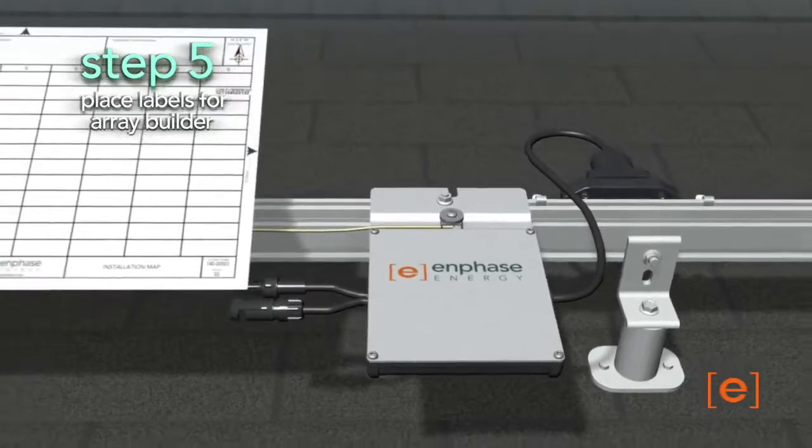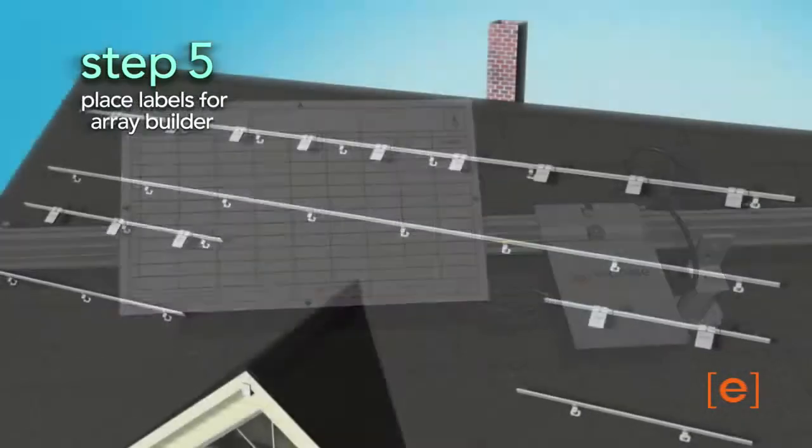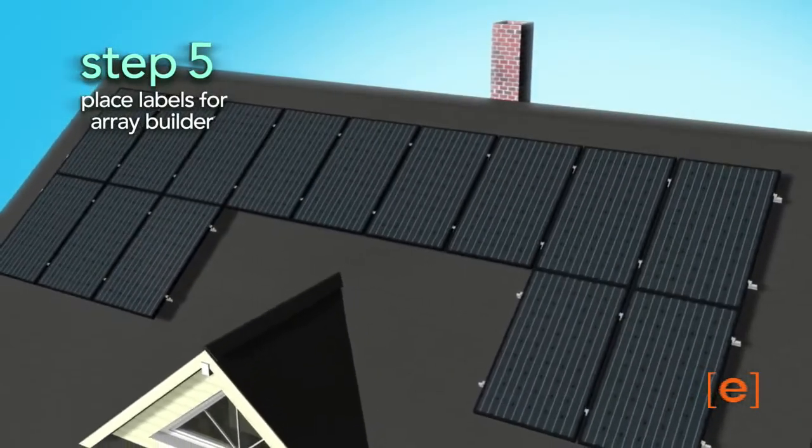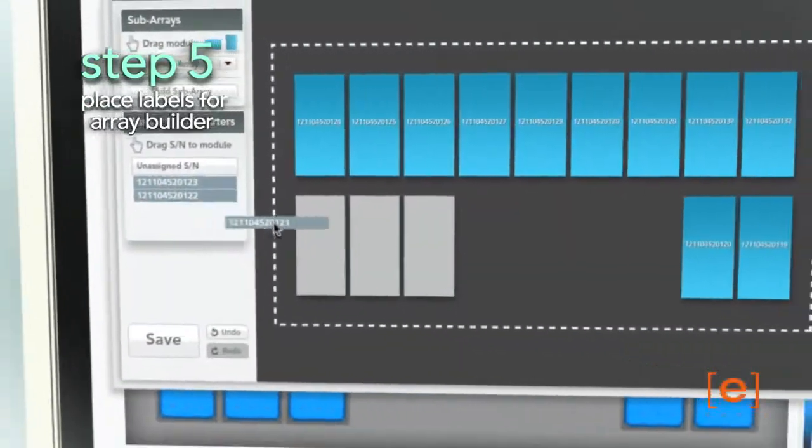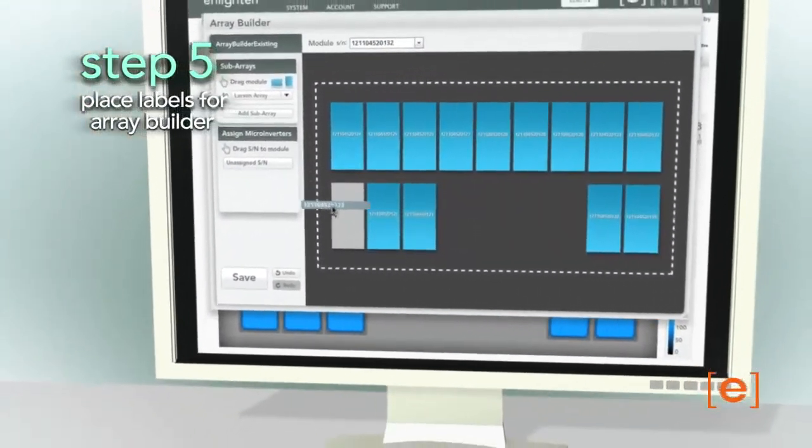Finally, use the labels to identify the location of each microinverter and use the Easy Online Array Builder utility to enable the array to be viewed in the Enlighten monitoring system.